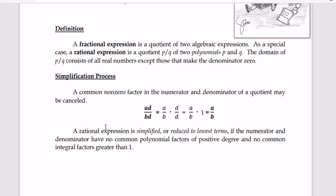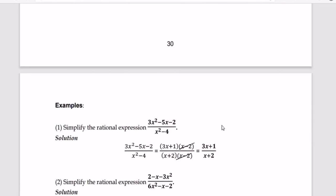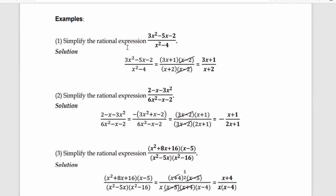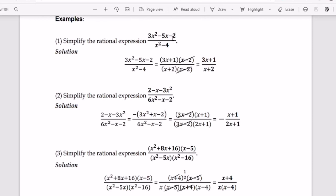Again, the goal is to simplify or reduce to lowest terms. To understand this topic, let's try an example. The first example is to simplify the rational expression 3x squared minus 5x minus 2 divided by x squared minus 4.